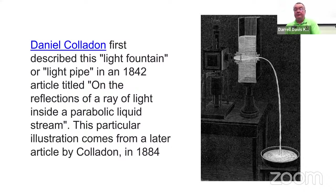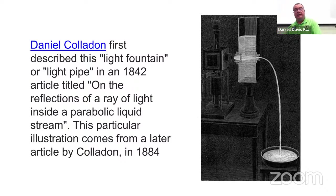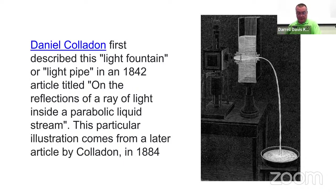So how did this start? A guy named Daniel Coladon first described a light fountain. He made a tank, put light into it, then punched a hole in the side of the tank. Water came out in a stream and, lo and behold, in the bucket the water was flowing into, the light was going into the bucket too. So the idea that water can transmit light through internal reflection was demonstrated back in 1884.